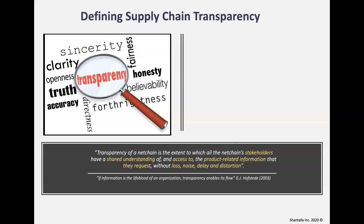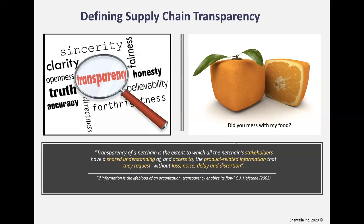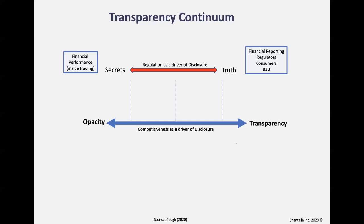Lost, noise, delay, or distortion can be caused by a lack of shared understanding, a lack of interoperability, a lack of standards, and marketing that adds irrelevant information. We all joke about gluten-free water and gluten-free tomatoes. Professor Hofstede says if information is the lifeblood of an organization, it's transparency that enables it to flow. Even for a simple product like an apple, it's important to let consumers know where it was grown and whether it was genetically modified.